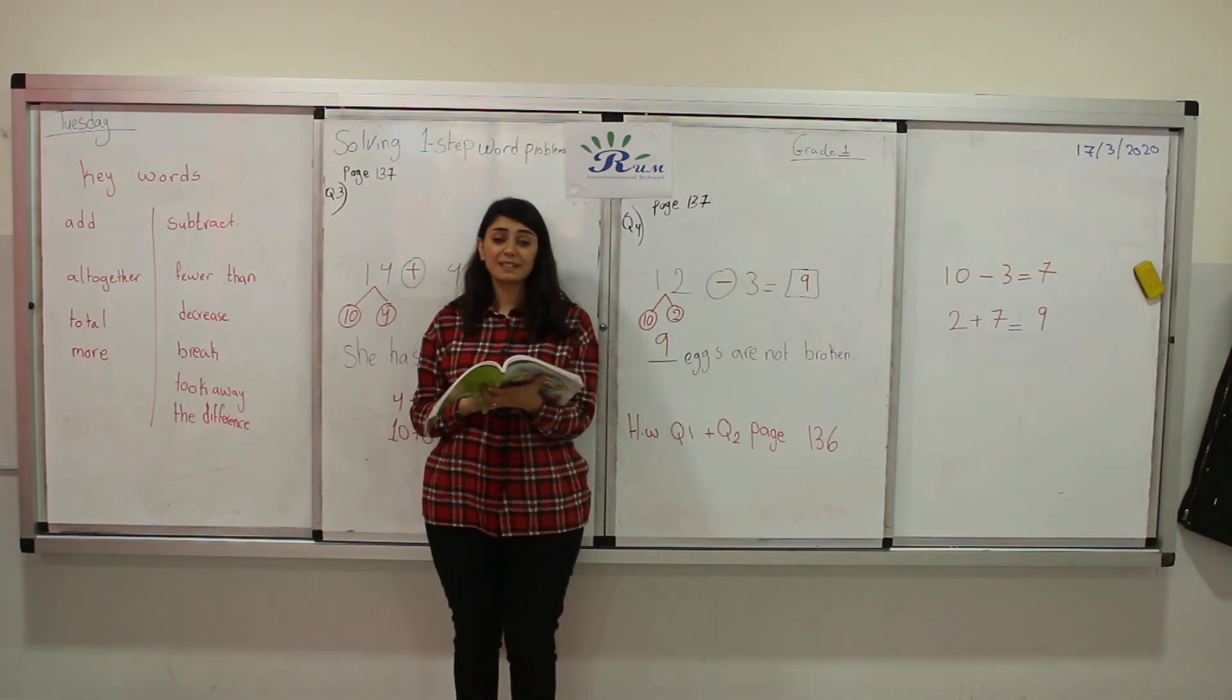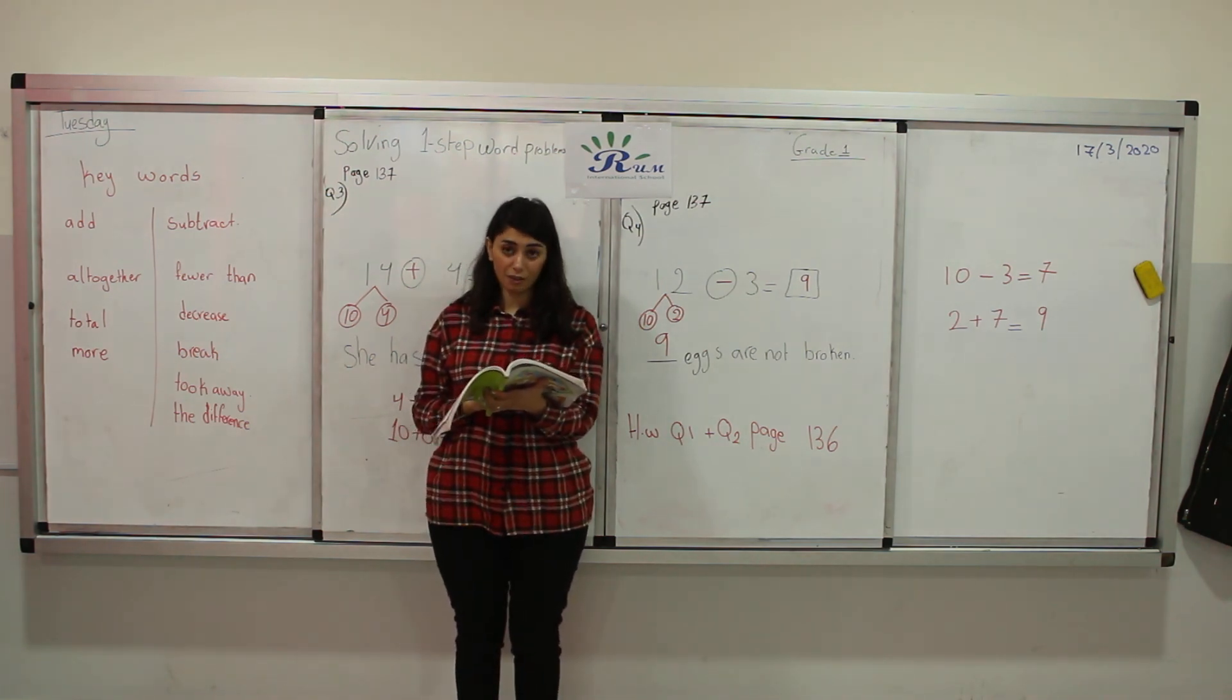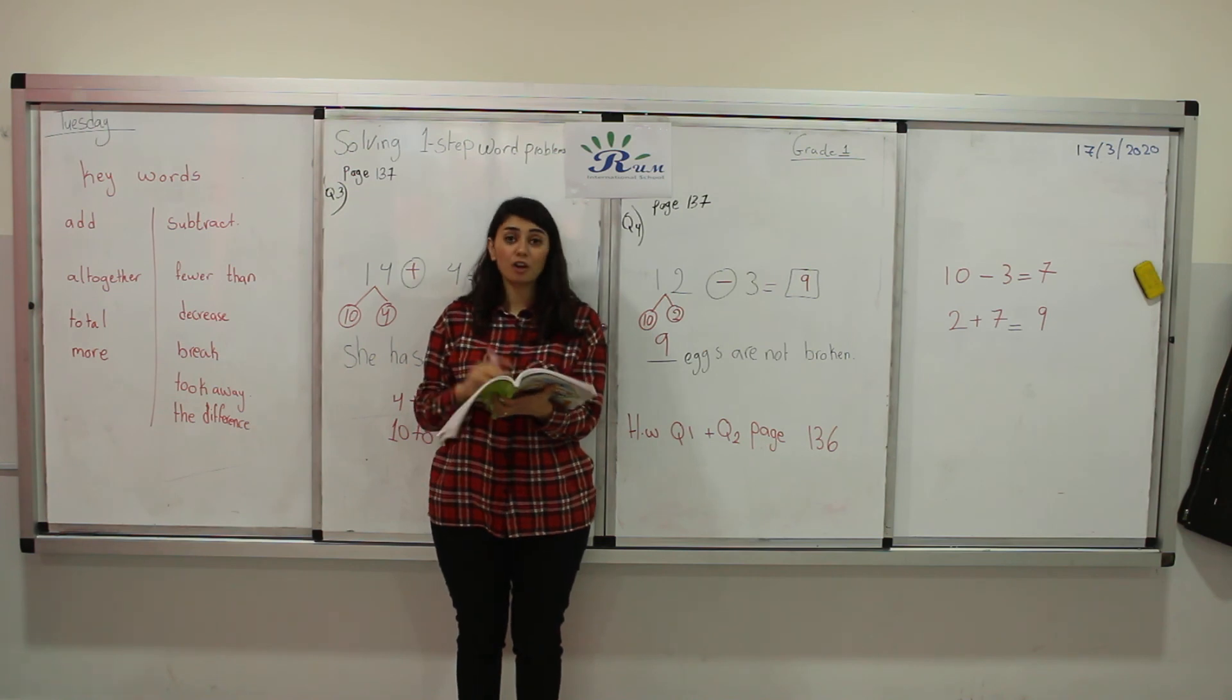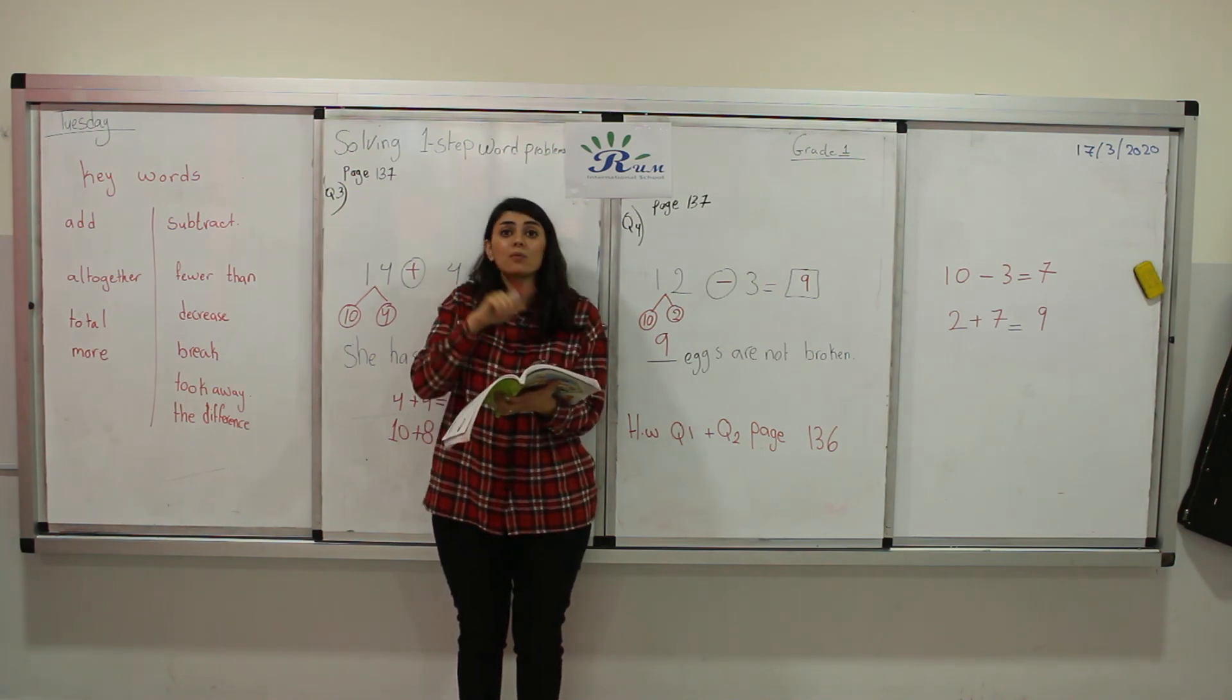Question number 2. There are 16 cookies on a plate all together. 4 of them are chocolate cookies.